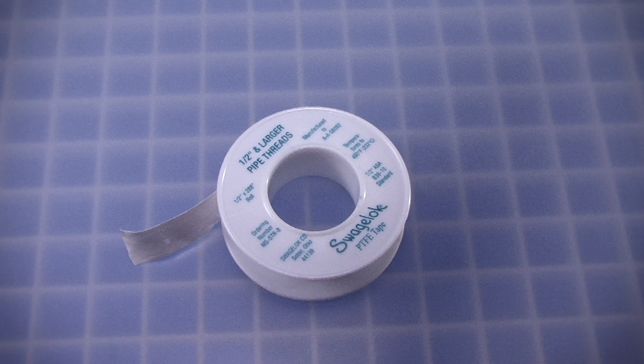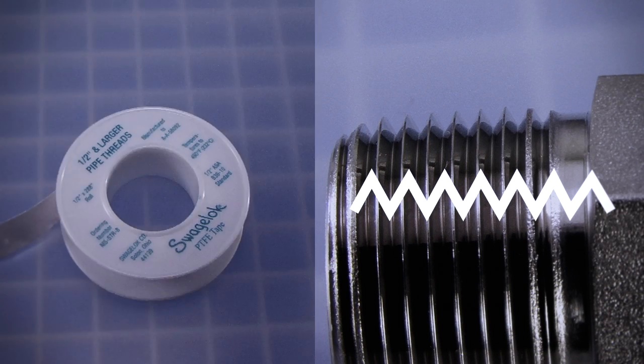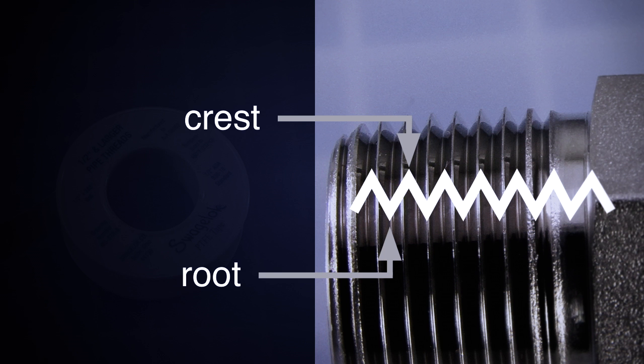A thread sealant is required on tapered pipe threads to fill in gaps between the crests and the roots to prevent system fluids from penetrating the connection.